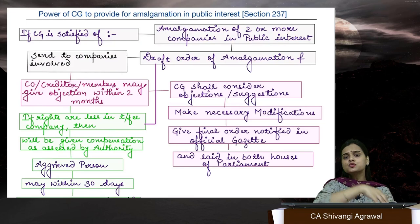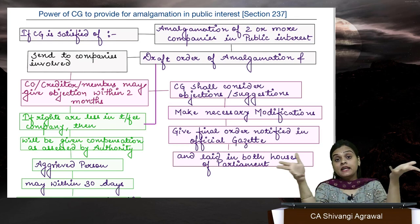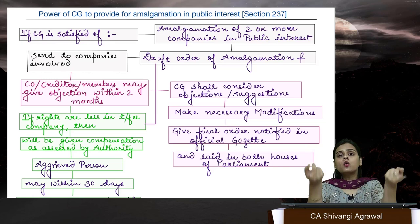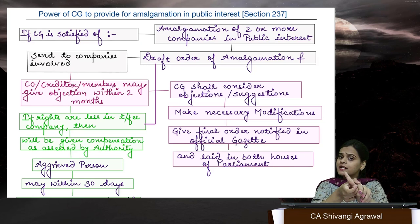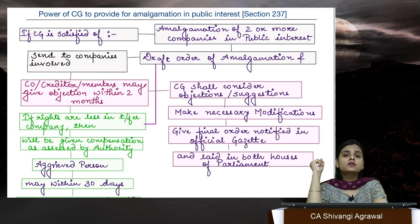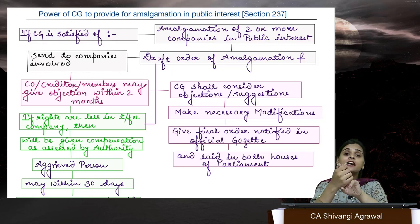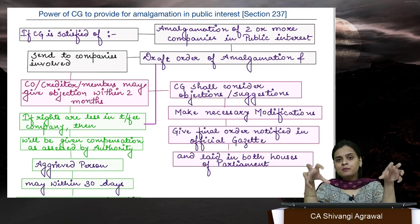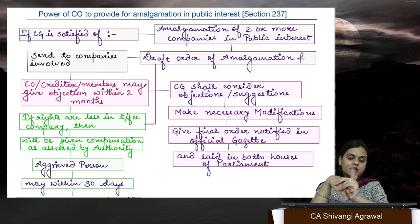Section 237: If the central government is satisfied that two companies must merge, it can pass such an order. Central government first drafts the order and sends it to both companies. If they have an objection, they can give it within two months. Rights and liabilities will not be affected; if members or creditors' rights are affected, they get compensation. If not satisfied with the compensation, they can appeal to tribunal within 30 days. The companies can object within two months — if not, or after considering objections, central government makes necessary modifications and passes the final order in the official gazette to implement the merger, which is also laid in the Houses of Parliament.